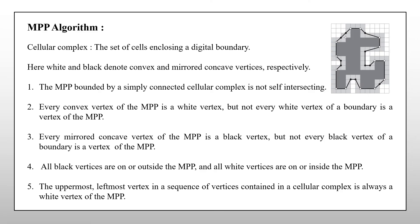The observations from the MPP approximation are this minimum perimeter polygon will never intersect itself at any region and every convex vertex of this MPP is always a white vertex but every white vertex of a boundary may or may not be the part of MPP.